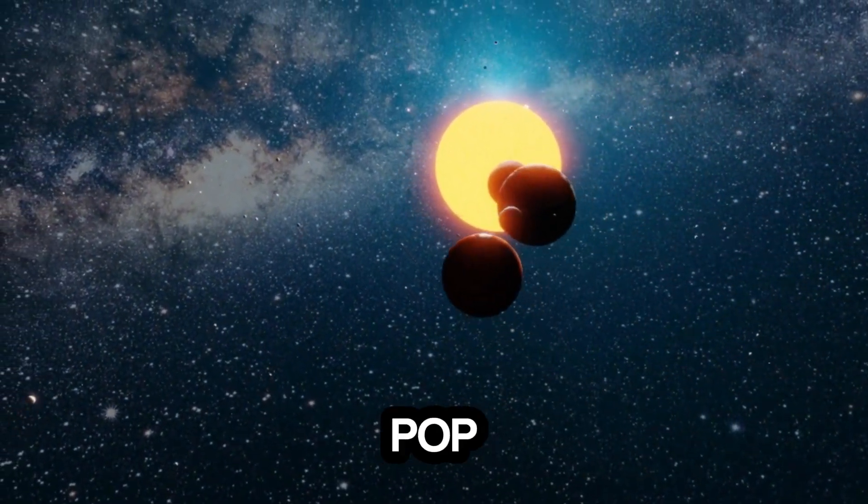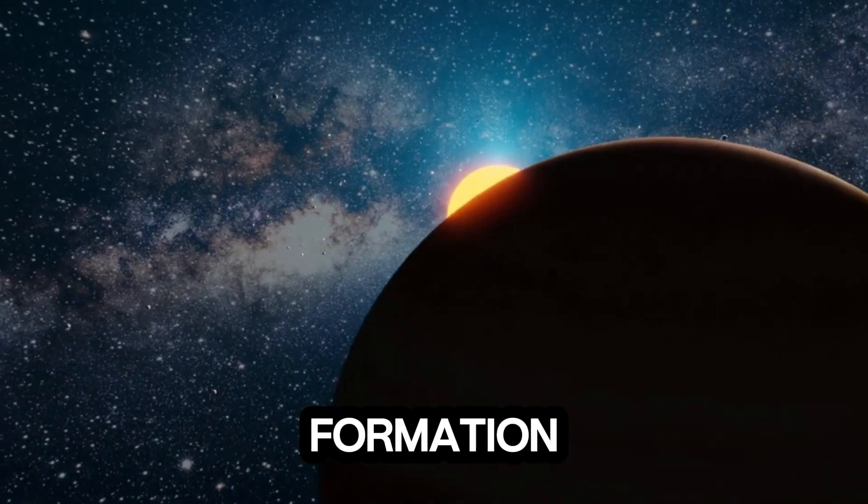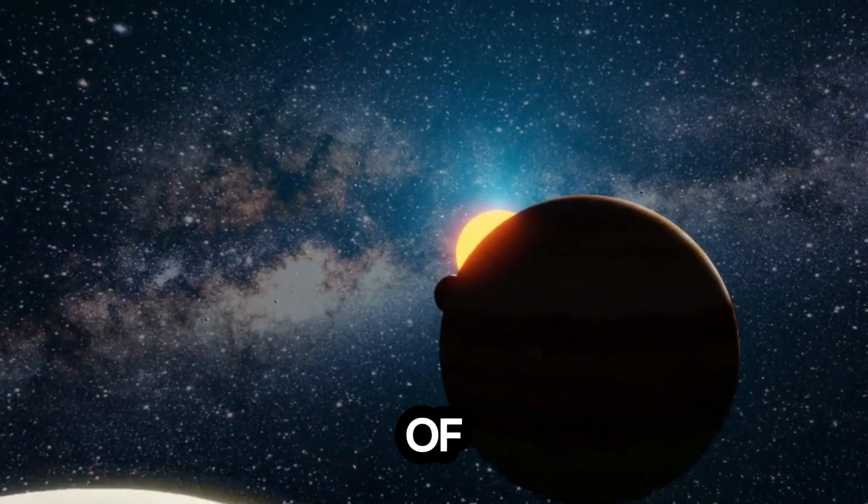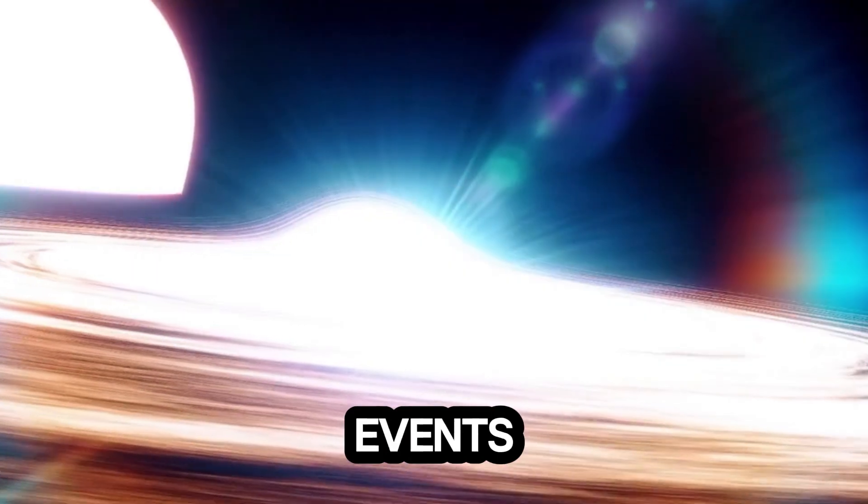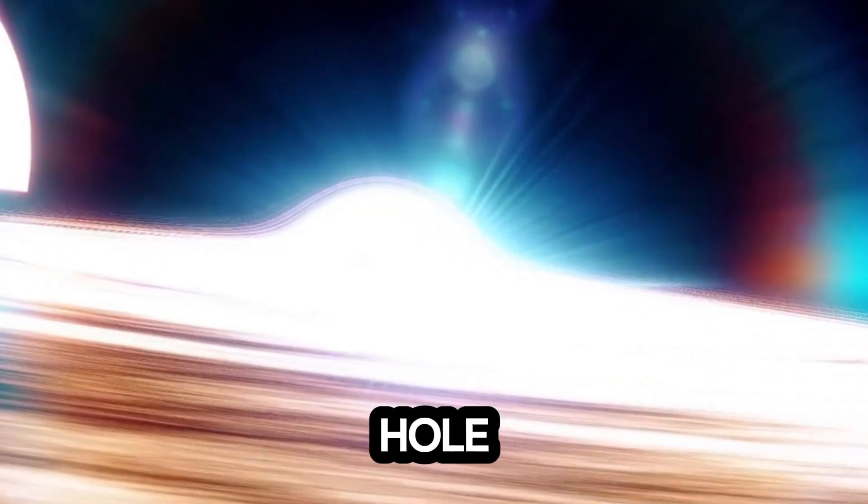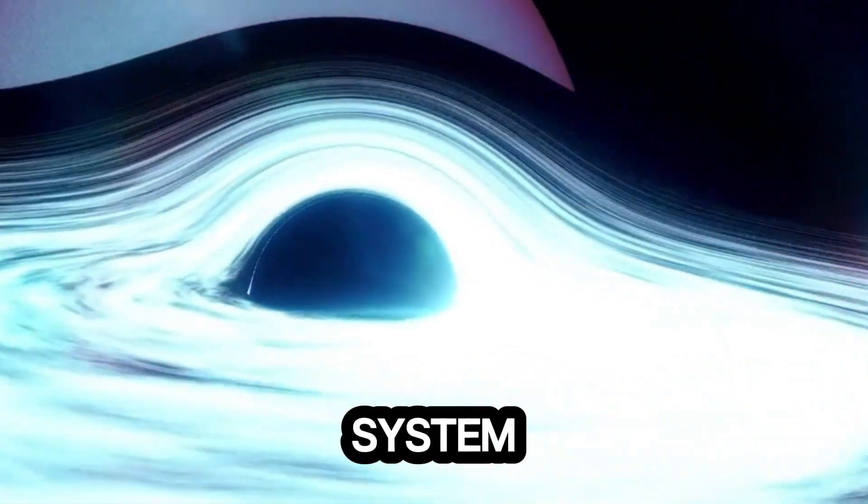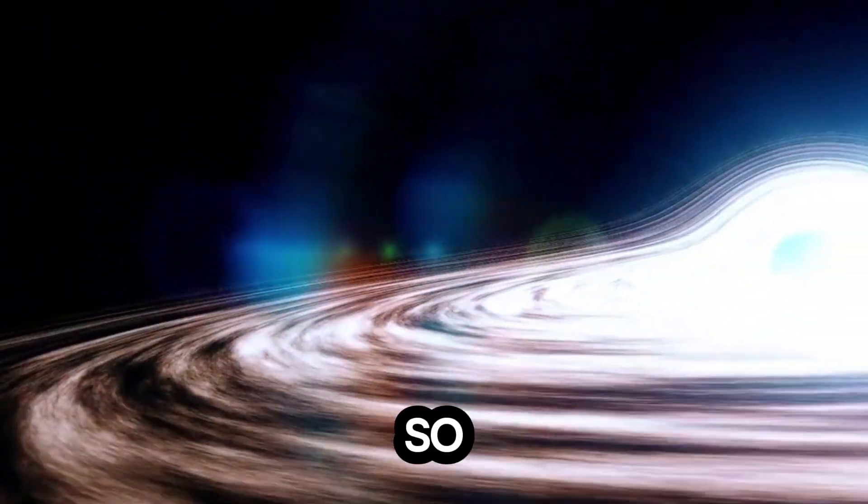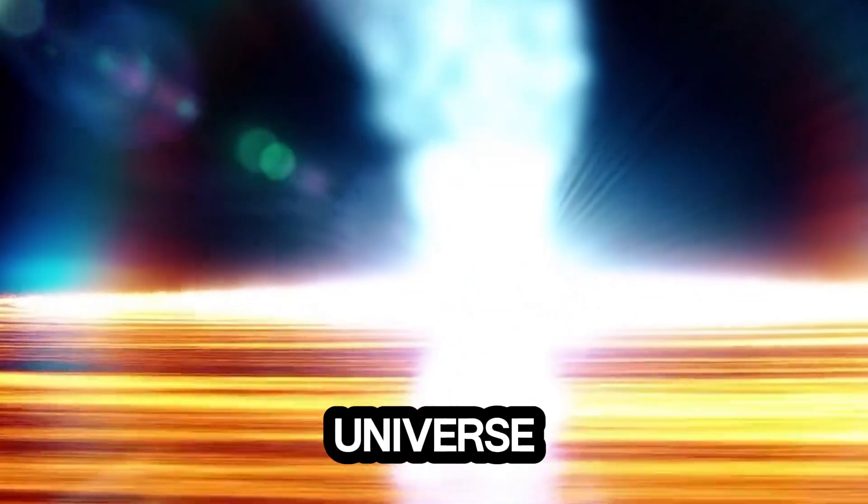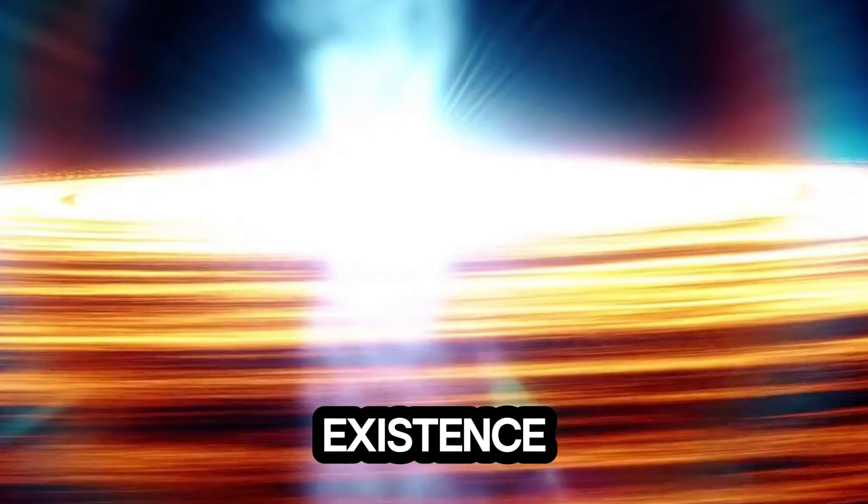Fortunately, black holes don't just pop up out of nowhere. Their formation requires the collapse of massive stars, and we closely monitor the skies for any such events. The nearest known black hole is 1500 light years away, in a system called HR 6819. So, for now, Earth is safe. But the concept remains a fascinating reminder of the immense power of the universe, and how fragile our existence is.